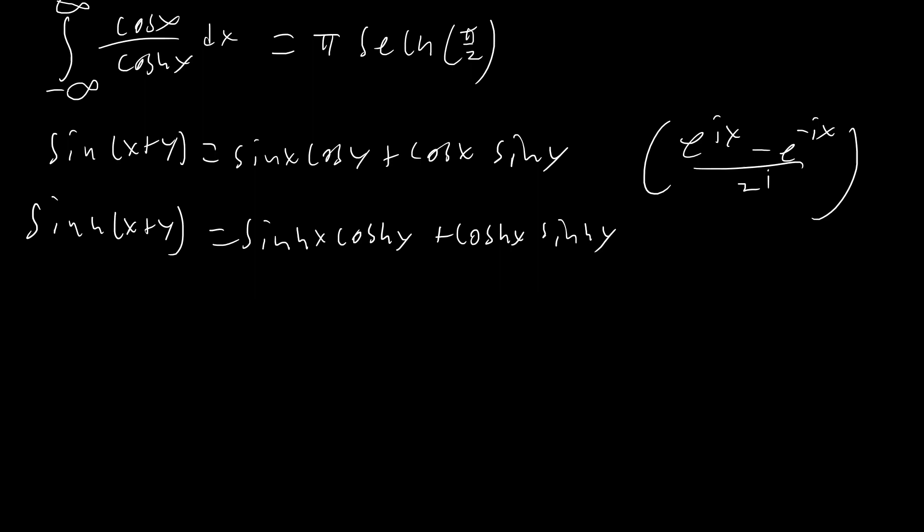Relatively simple to see that cosh of i x equals cosine x. Cosine of i x equals cosh of x. Sinh of i x equals i sine of x. And sine of i x equals i sinh x. All right, so that's all we'll be using.